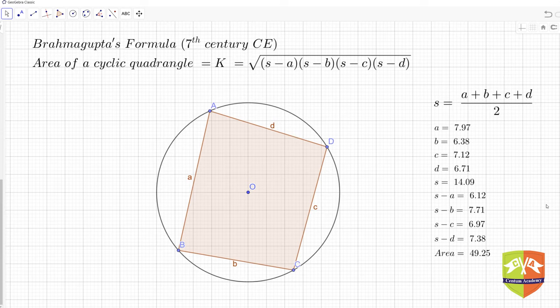Brahmagupta existed in the 7th century CE and apart from other mathematicians like Bhaskaracharya and Aryabhata, he is well known for his algebra and geometrical results. The formula is K equals square root of (s minus a)(s minus b)(s minus c)(s minus d), where K represents the area of a cyclic quadrilateral.